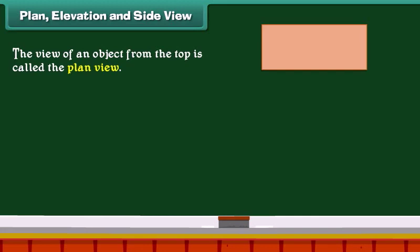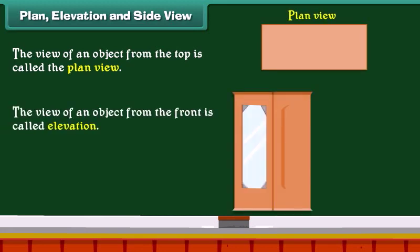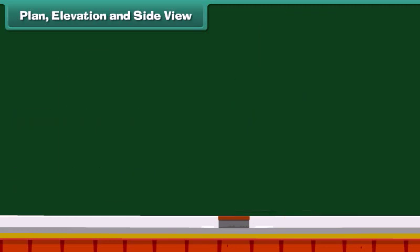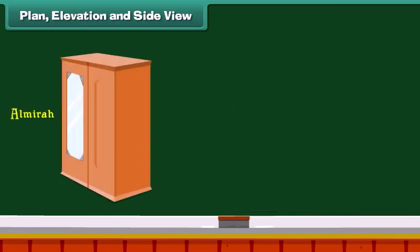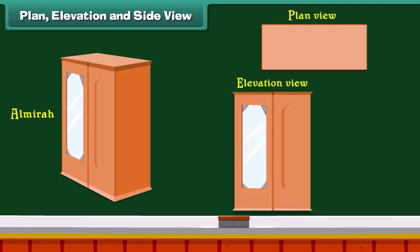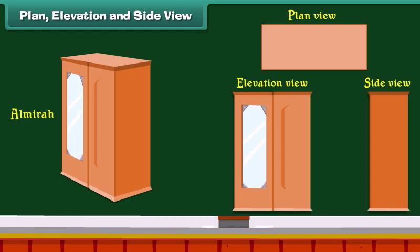The view of an object from the top is called the plan view. The view from the front is called elevation. The view from the side is called the side view. Look at this almira: this is the plan view of the almira, this is the elevation view, and this is the side view of the almira.